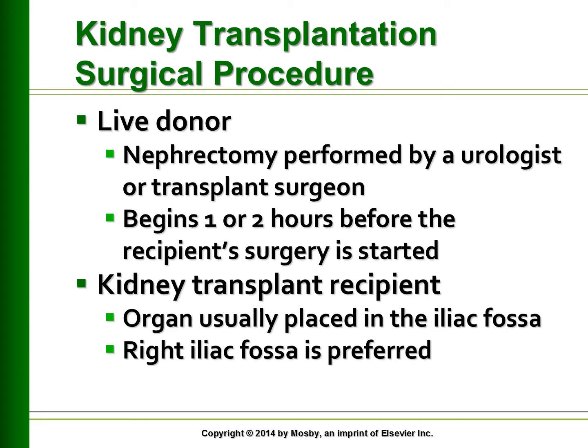The kidney transplant in the recipient is usually placed in the iliac fossa; the right iliac fossa is preferred. Before any incision is made, a urinary catheter is placed into the bladder. An antibiotic solution is instilled to distend the bladder and decrease the risk of infection. A crescent-shaped incision is made extending from the iliac crest to the symphysis pubis. Rapid vascularization is critical to prevent ischemic injury to the kidney. The donor artery is anastomosed to the recipient's internal or external iliac artery, and the donor vein is anastomosed to the recipient's external iliac vein. On completion of the anastomosis, clamps are released and blood flow to the kidney is re-established. The kidney should become firm and pink, and urine may begin to flow from the ureter immediately. The donor ureter is attached to the bladder, and the transplant in total takes about three to four hours.